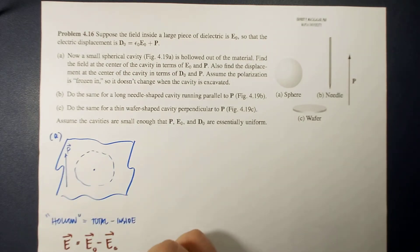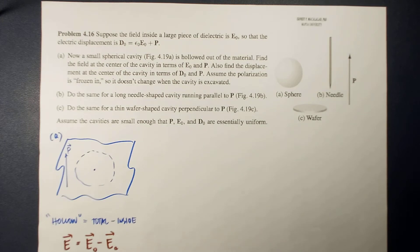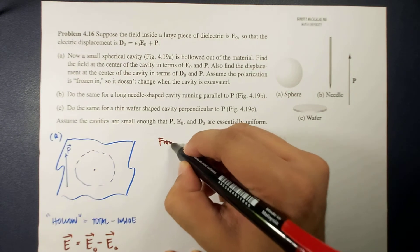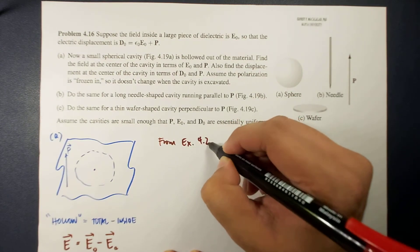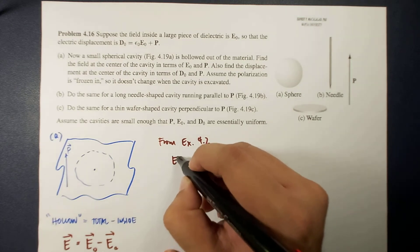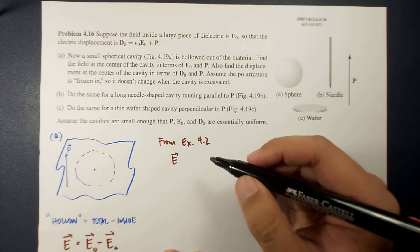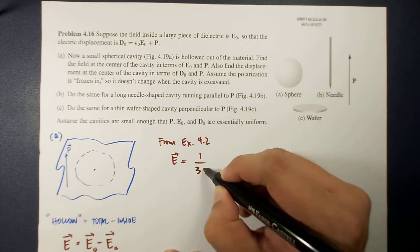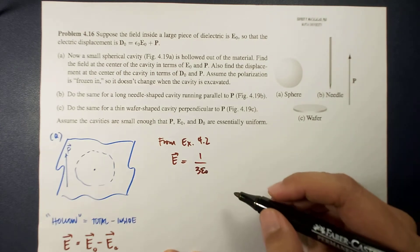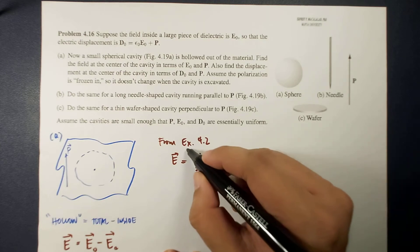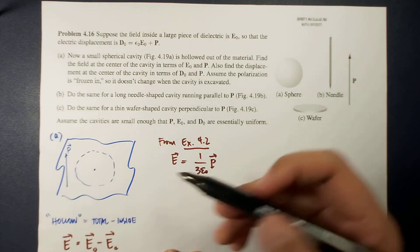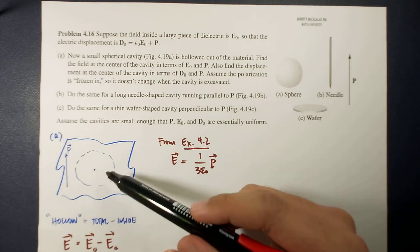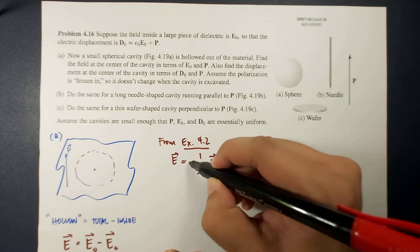For part A, we use example 4.2, which tells us that the electric field of a uniformly polarized sphere equals P over 3 epsilon_0. Because the cavity is essentially a sphere with opposite polarization, we add a negative sign, giving the field of the cavity as negative P over 3 epsilon_0.